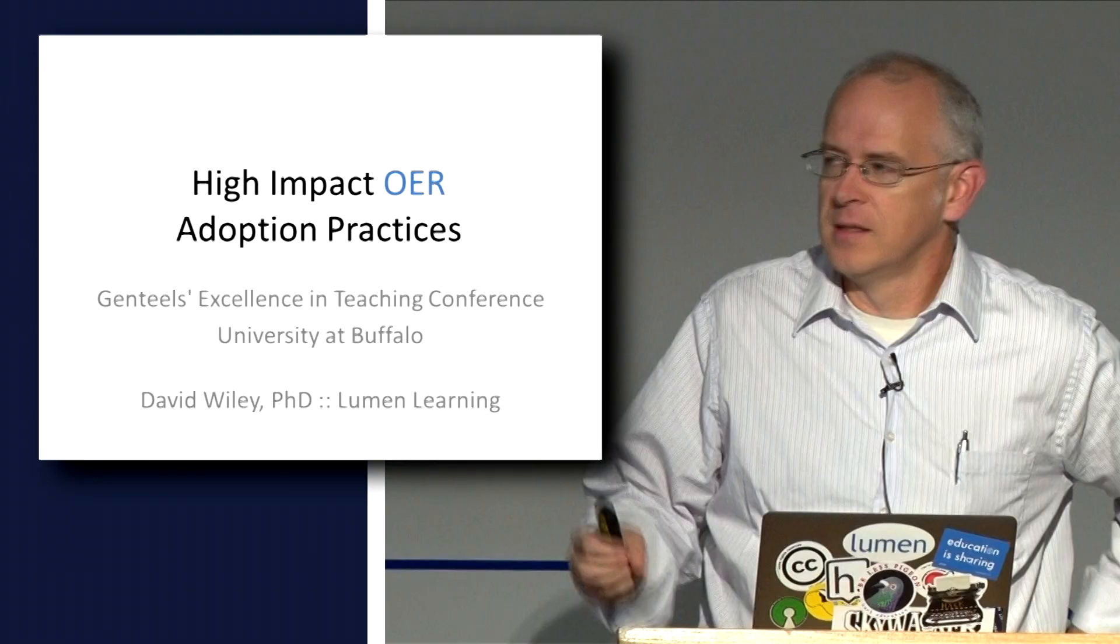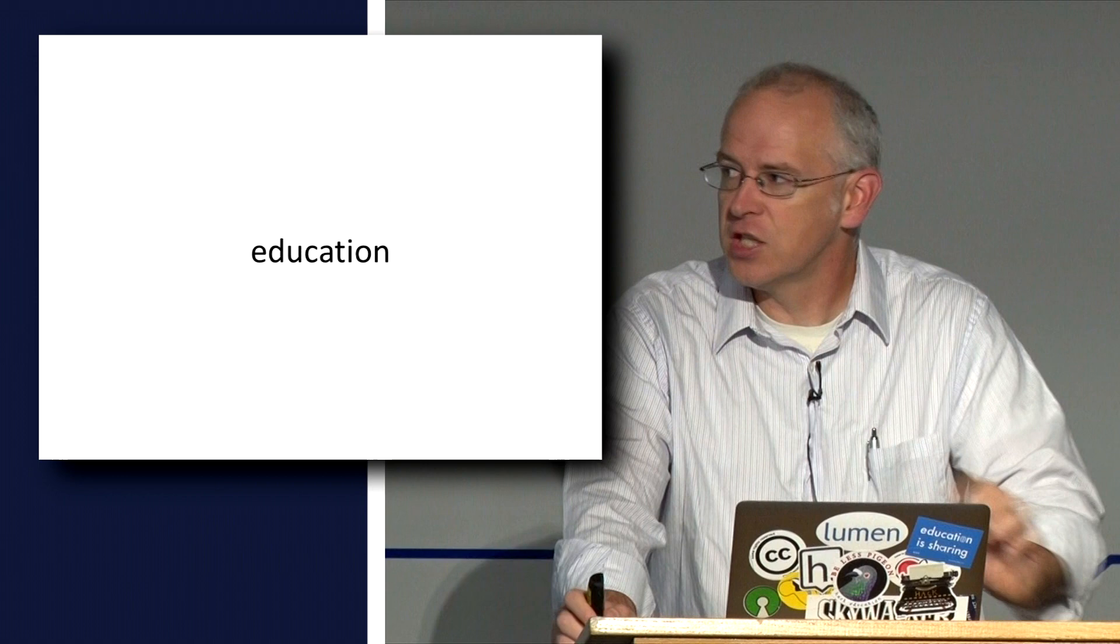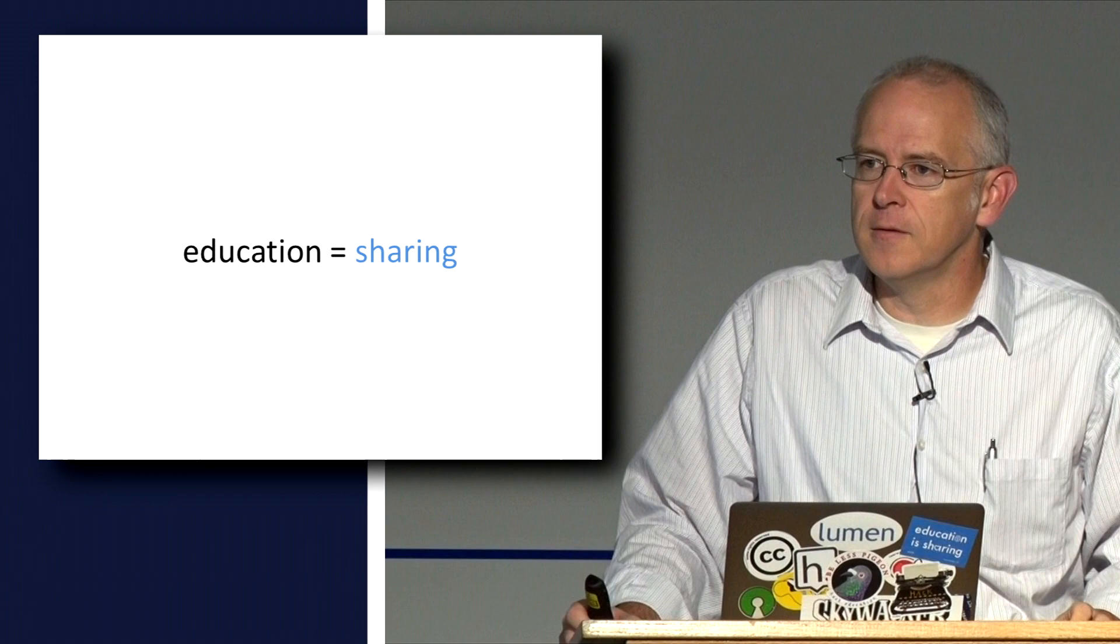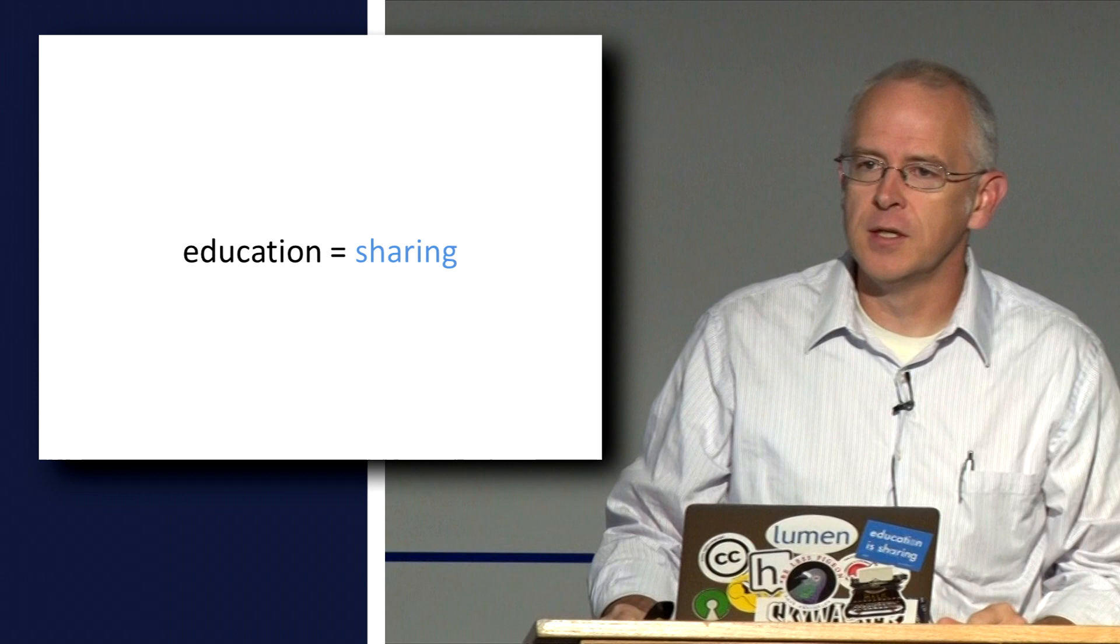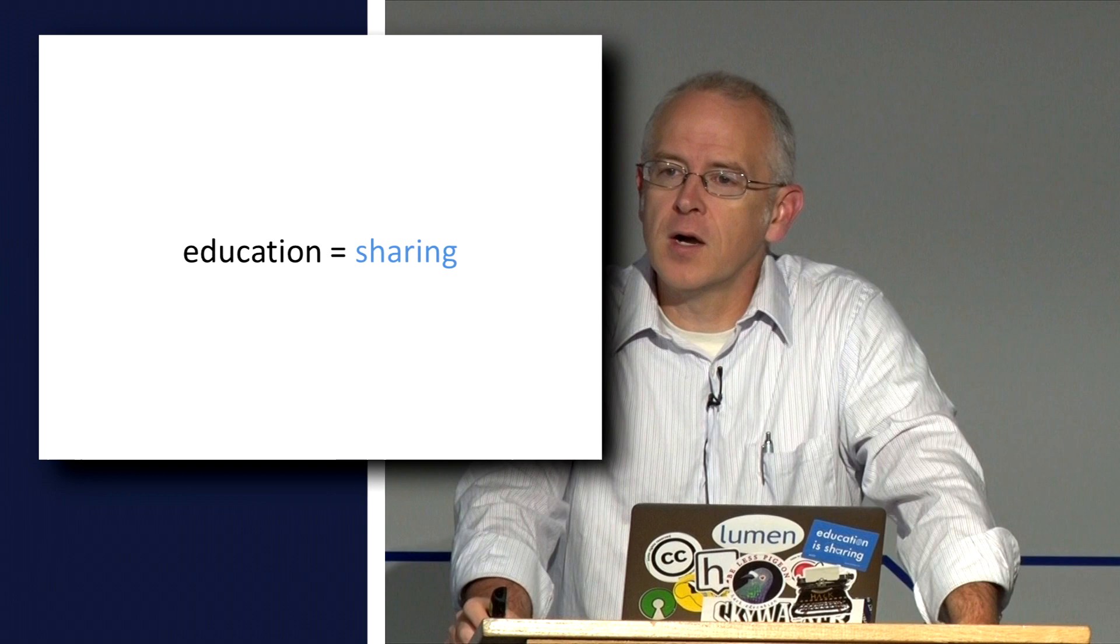I'm going to talk about open educational resources, and I should start by saying that this set of slides is an open educational resource. I'll say more about what this green button means in a moment. Let me start by talking about education and the nature of education. I want to argue that education is sharing, and in the big Venn diagram of the universe, there's sharing which is a bigger circle, and education falls wholly inside of that broader circle of sharing.